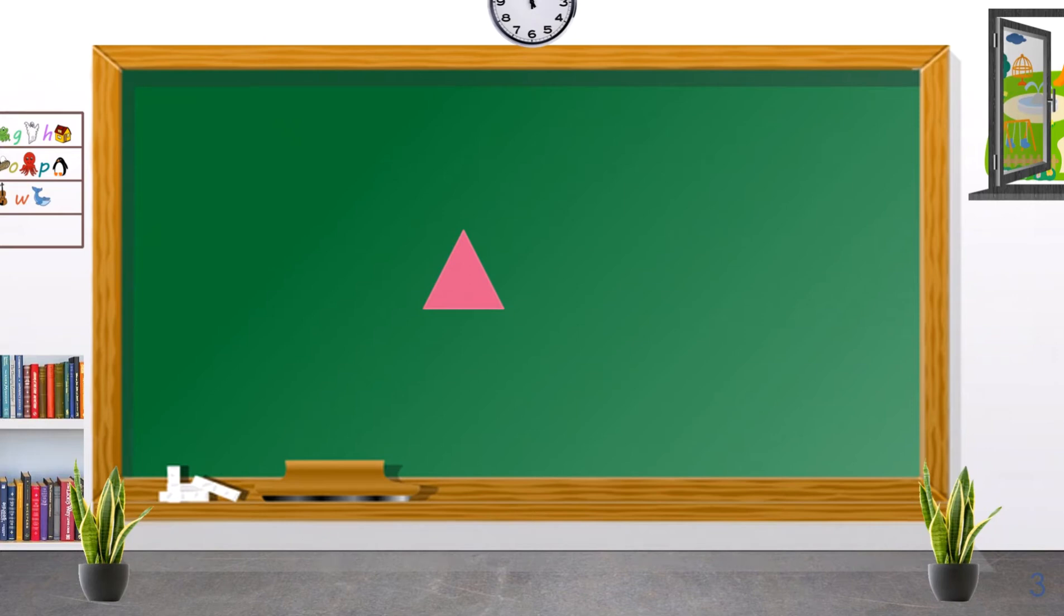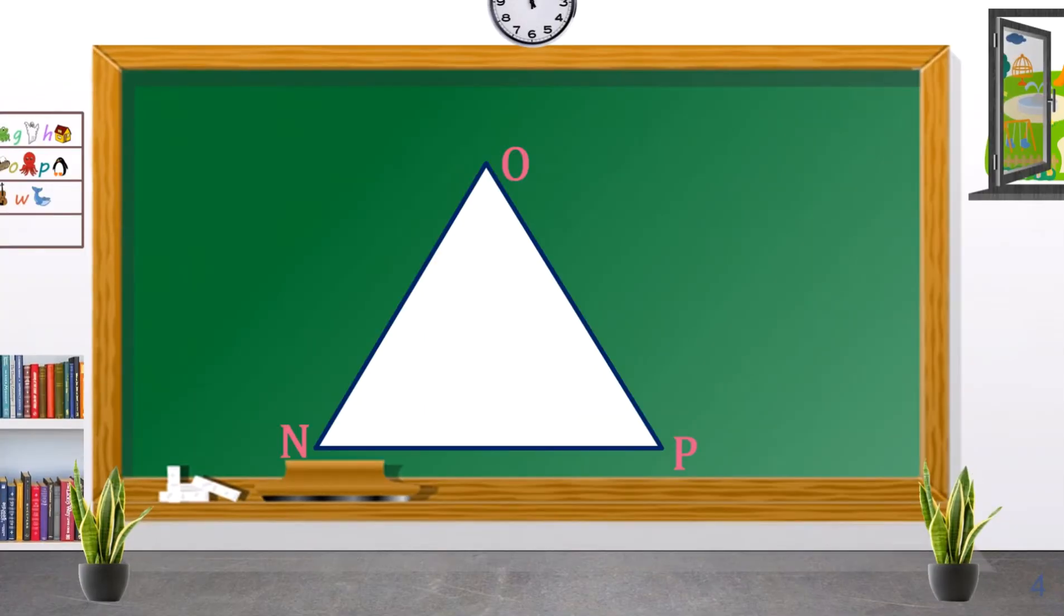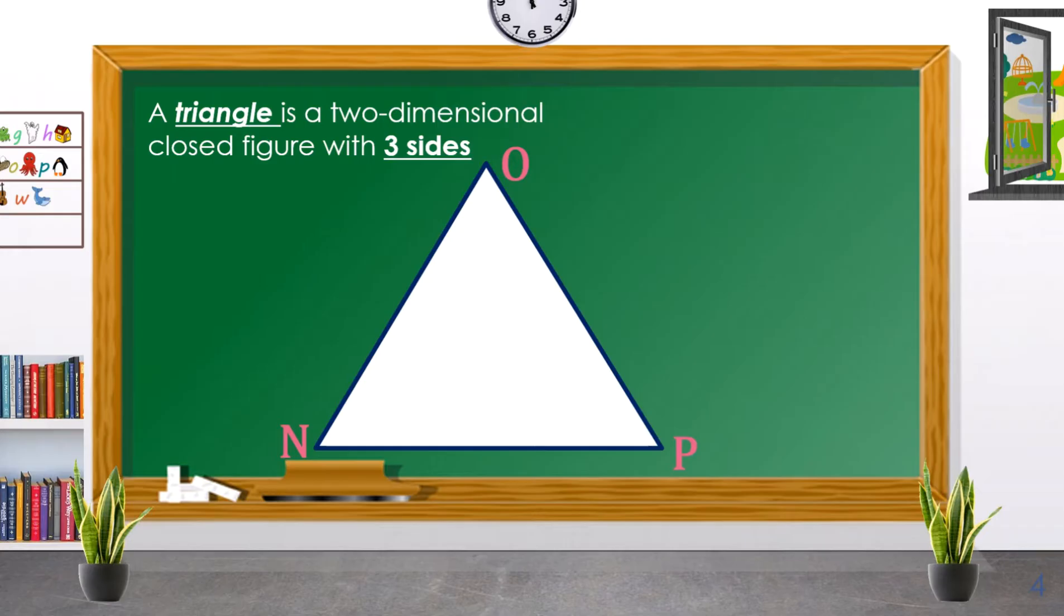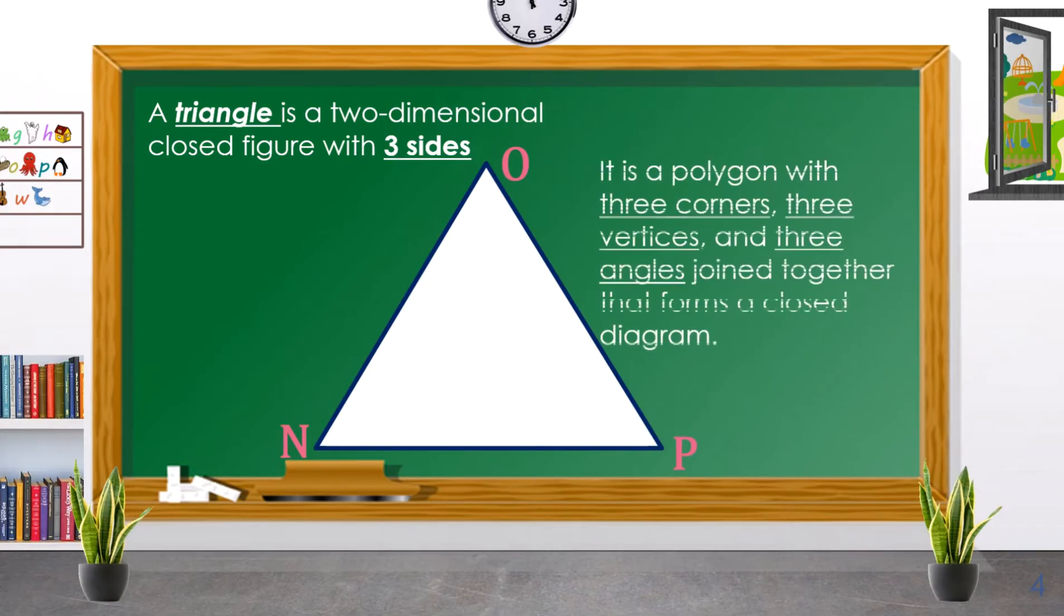Let us start with the triangle. Let us know what are the classifications of triangle and what is a triangle. A triangle is a two-dimensional closed figure with three sides. It is a polygon with three corners, three vertices, and three angles joined together that form a closed diagram.